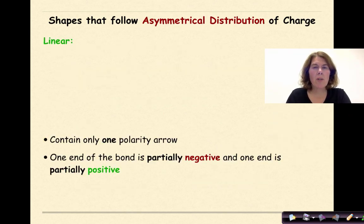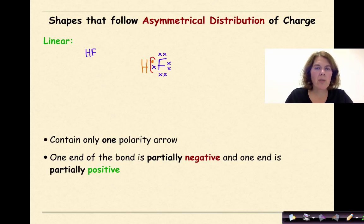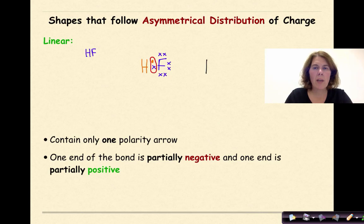The first example we're going to look at is a linear one: the molecule HF. We start with fluorine, which has 7 valence electrons. Then we put down hydrogen, which has 1 valence electron. We can see the shared pair of electrons. The structural diagram shows H, a line representing the shared pair, then fluorine with 3 pairs of non-bonding electrons.